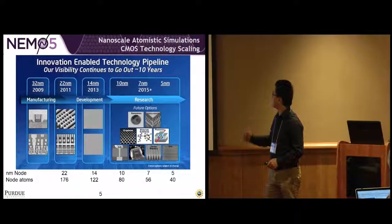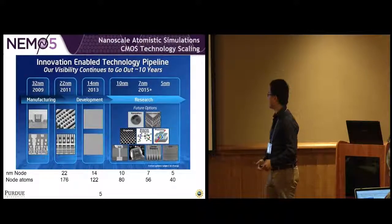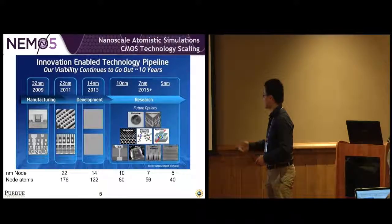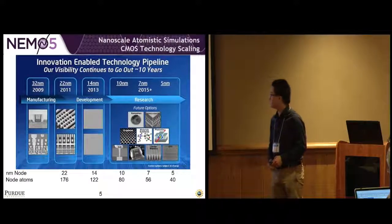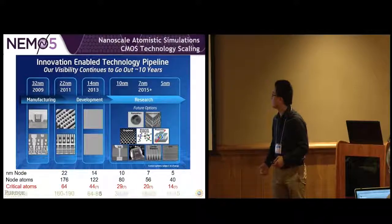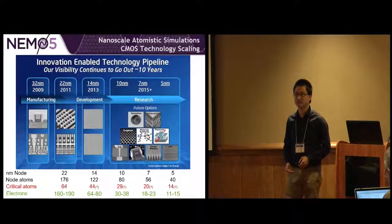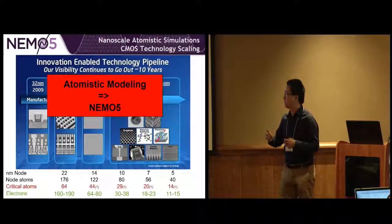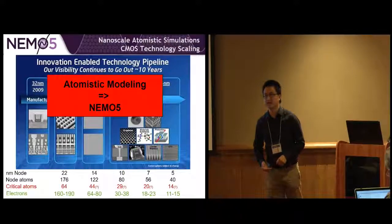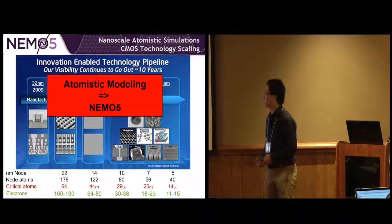Let's take a look back at the roadmap. When we think about the seven nanometer or five nanometer transistors, the node atoms is 46 or 40 atoms. The critical atoms is just 20 or 14. And when we take a look at the electrons, less than 20 electrons. This really raises the requirement of atomistic modeling. That's what we do with the NEMO5 software developed in our group.